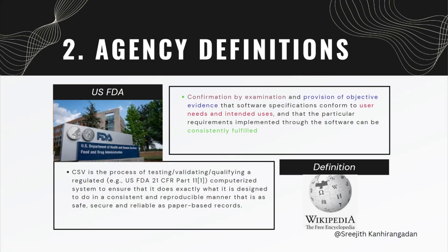I want to show you a different definition from Wikipedia. It says CSV is the process of testing, validating, or qualifying a regulated — for example, USFDA 21 CFR Part 11 — computerized system to ensure that it does exactly what it is designed to do in a consistent and reproducible manner that is as safe, secure, and reliable as paper-based records. You can see there is consistency across the definitions, so we are going to learn more about what each of these mean.